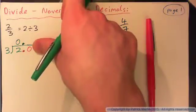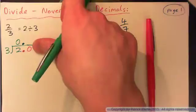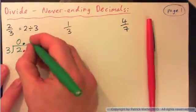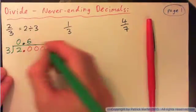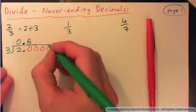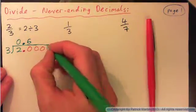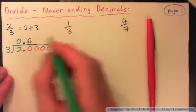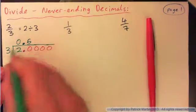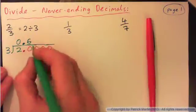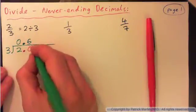How many times does 3 go into 20? Well, 7 threes is 21, so it's got to be less than that. How about 6? 6 threes is 18. So 3 into 20 goes 6 times, remainder 2.